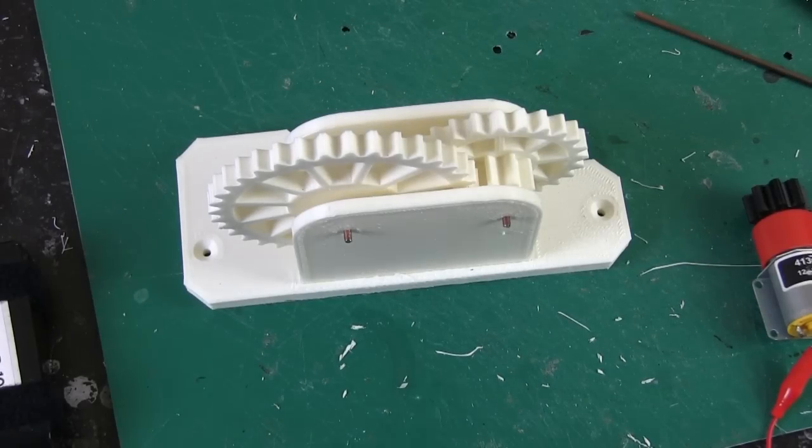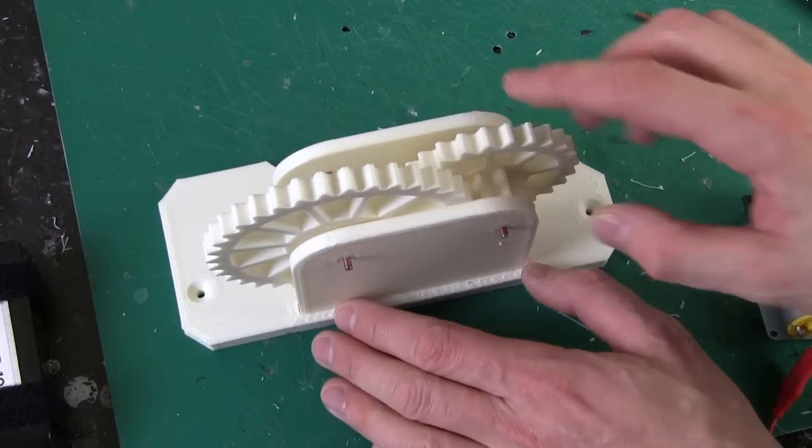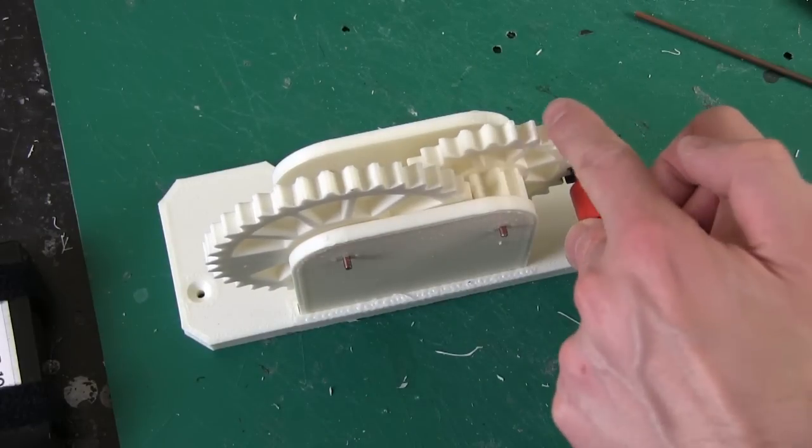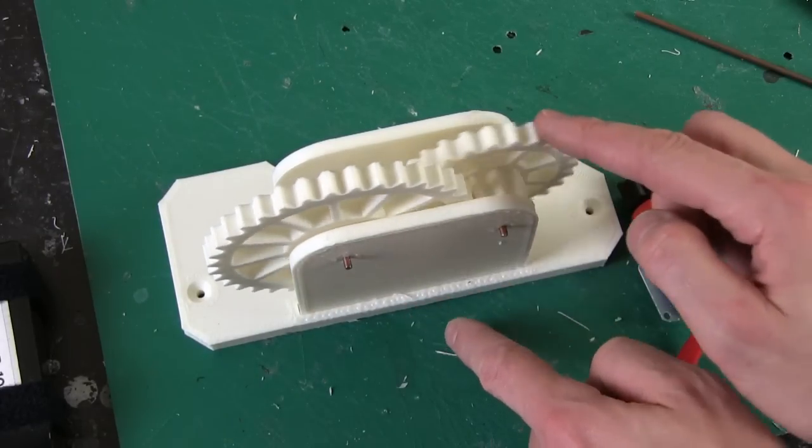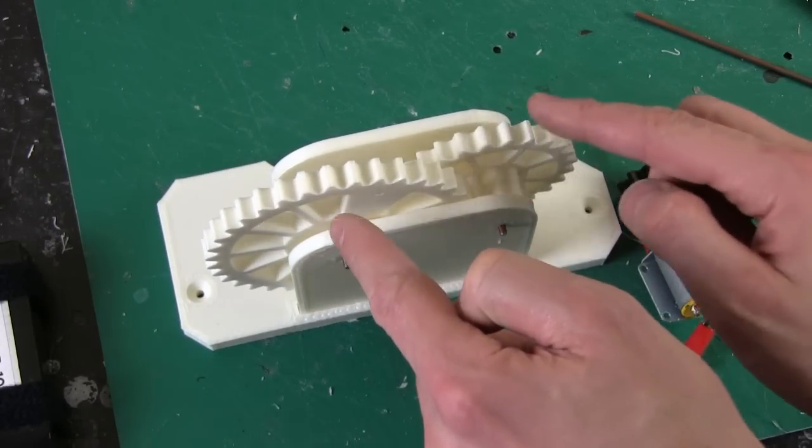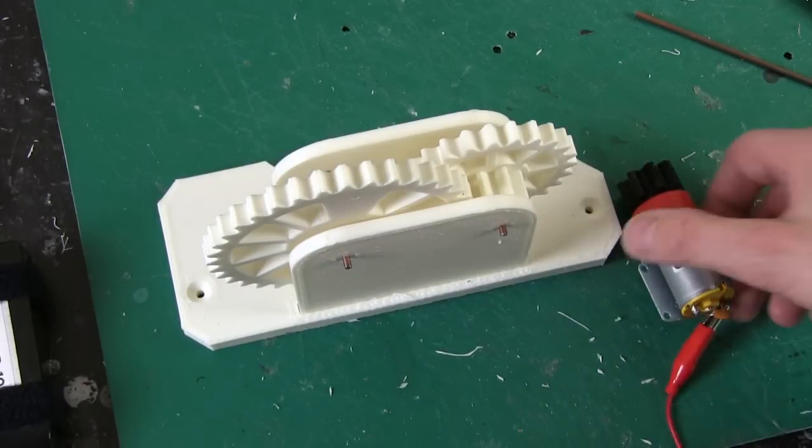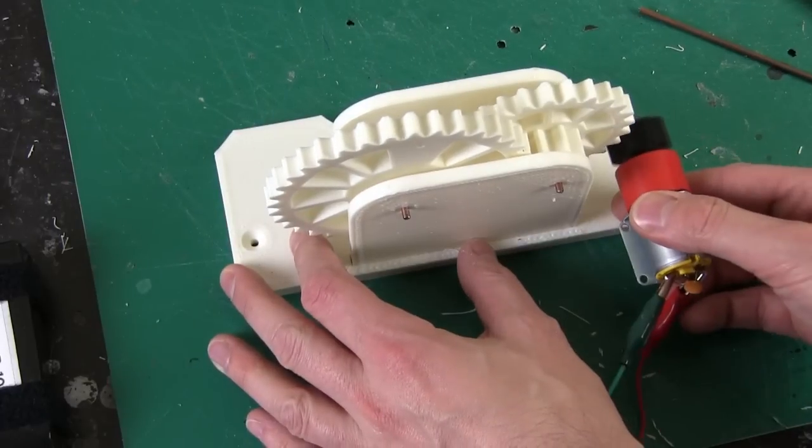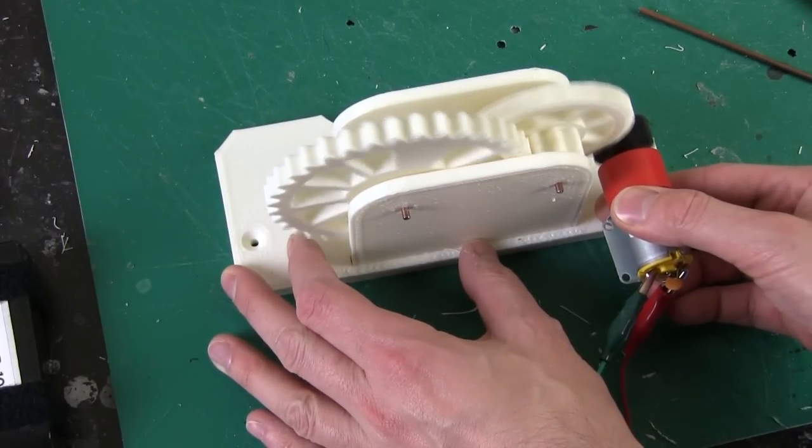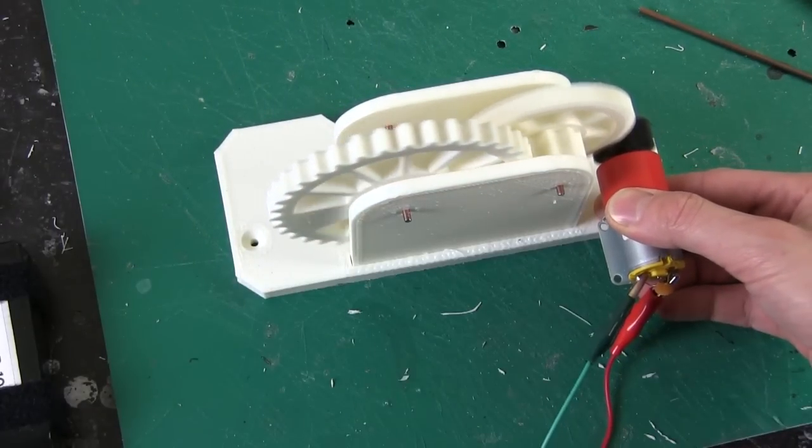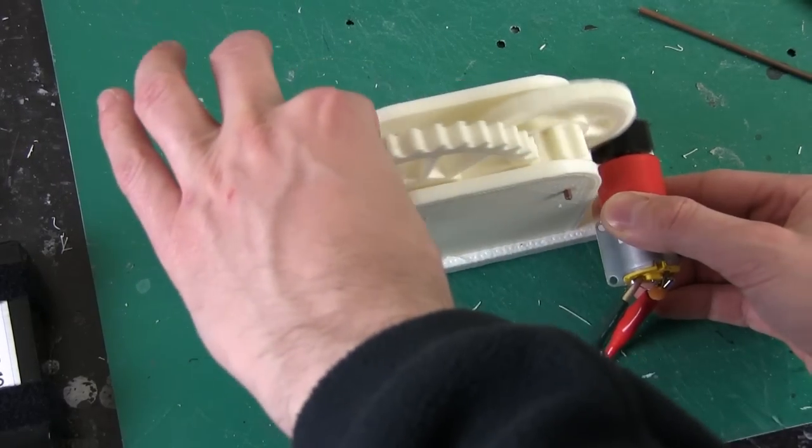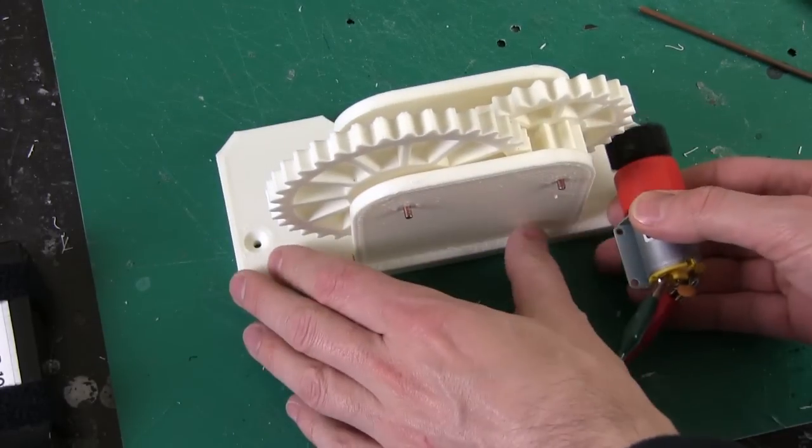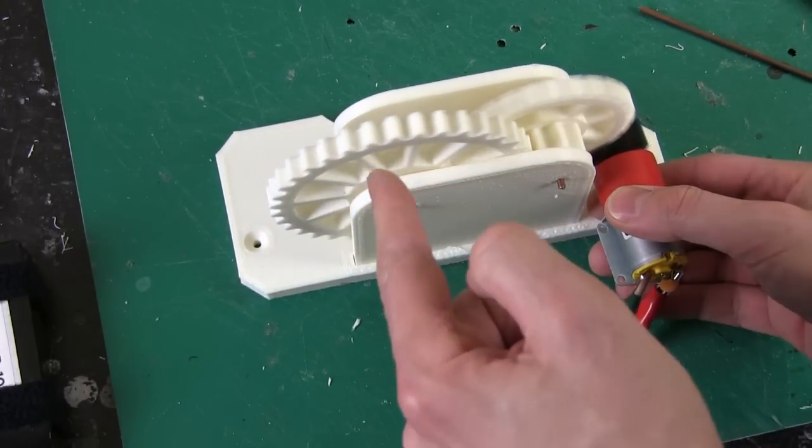So here's my gearbox mostly assembled. This gear turns this gear, and this gear turns this gear, so you can see this one's going much quicker than this one is. And if I just turn on this motor, which goes pretty quick, and stick it on here, we can see that whole thing turns. So this has got quite a bit of torque compared to this, which I can just stop.